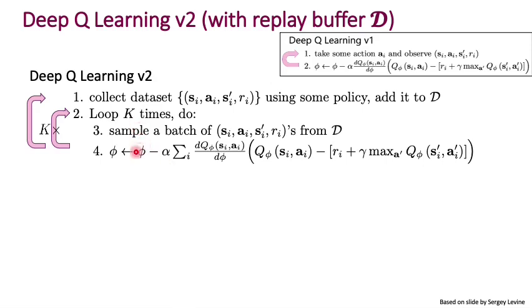And once we've looped K times, then we go back and use potentially a new policy and add to our replay buffer. Everything that's happening in here does not involve any interaction with the environment. All of this stuff in here is just optimization based on experience we've already collected.